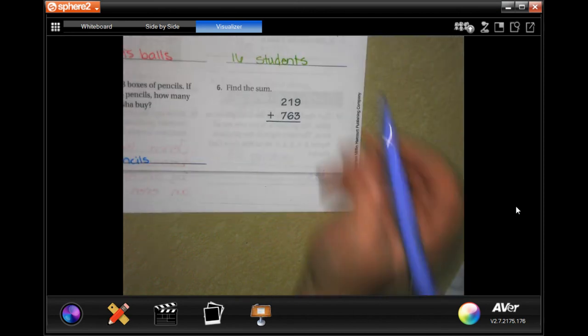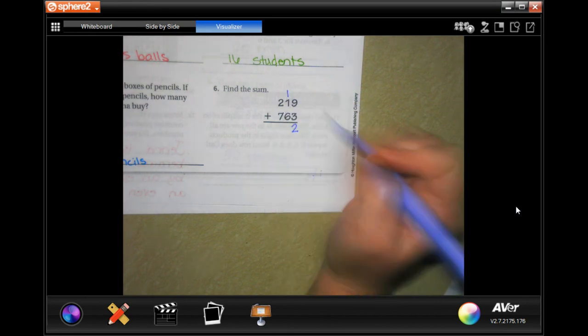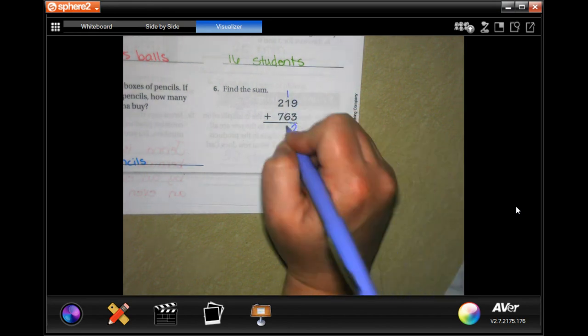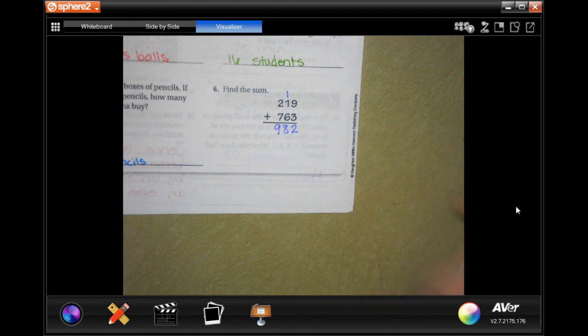Find the sum. So all we're doing is adding, guys. Nine plus three is 12, we're going to carry the one. One plus one is two, plus six is eight. Two plus seven is nine. 982.